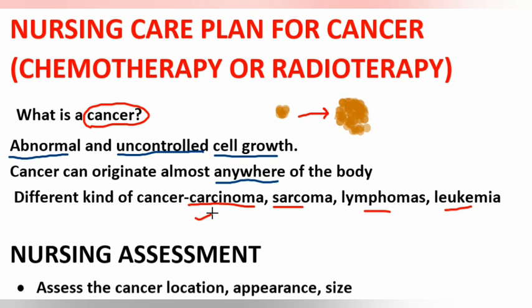Carcinoma arises from the cells that cover external and internal body surfaces, for example lungs, breast, and colon. Sarcoma is cancer arising from cells found in the supporting tissues of the body, such as bone, cartilage, fat, connective tissues, and muscles. Lymphoma is cancer that arises in the lymph nodes and tissues of the body's immune system.